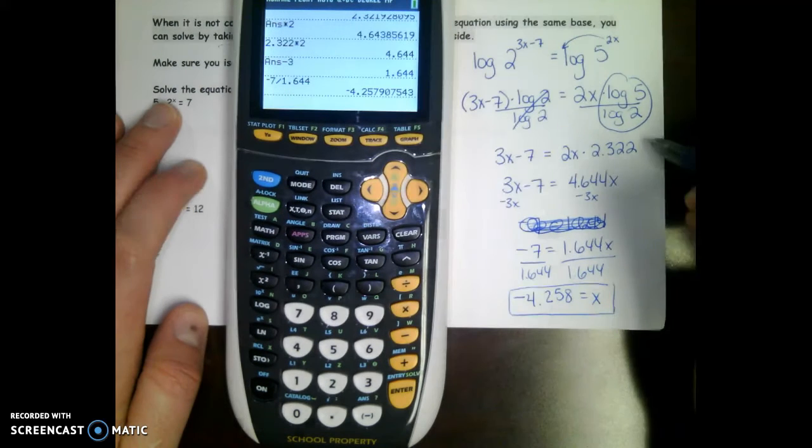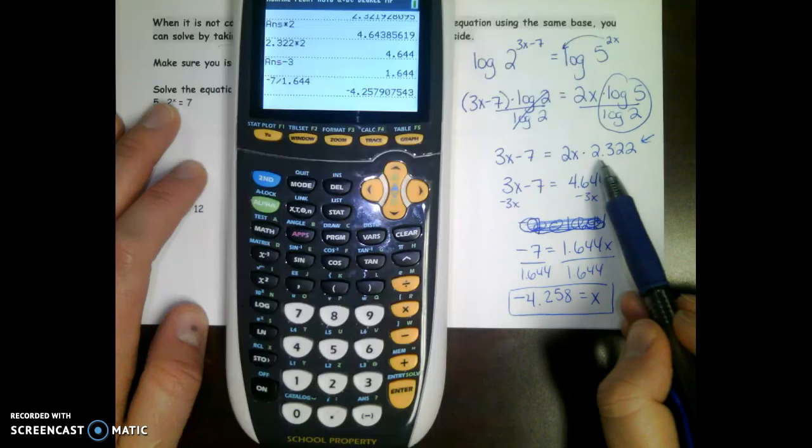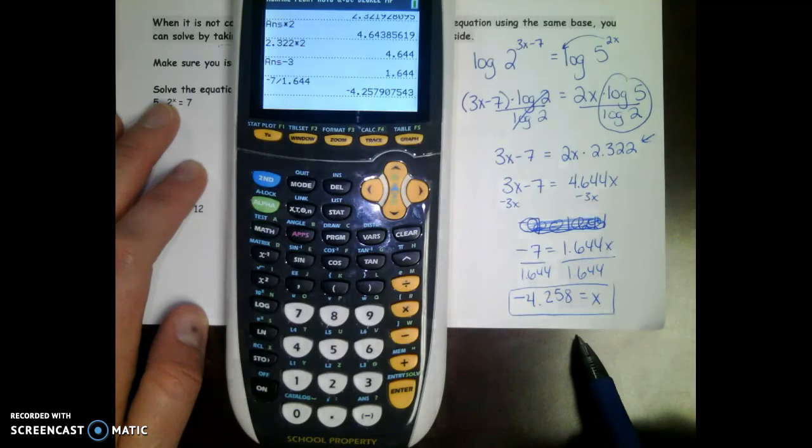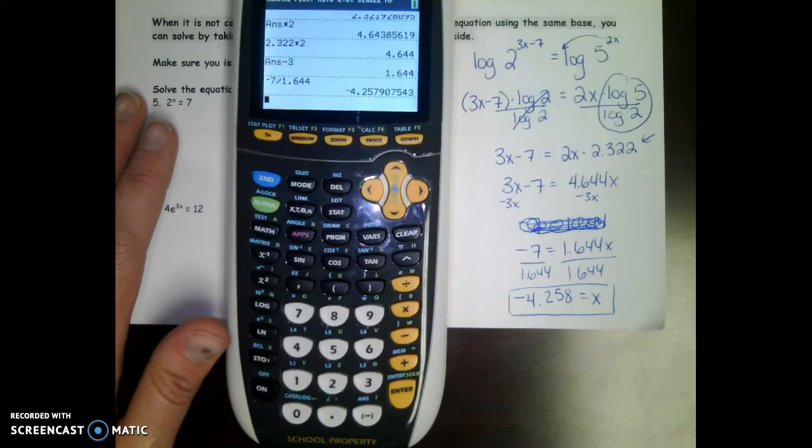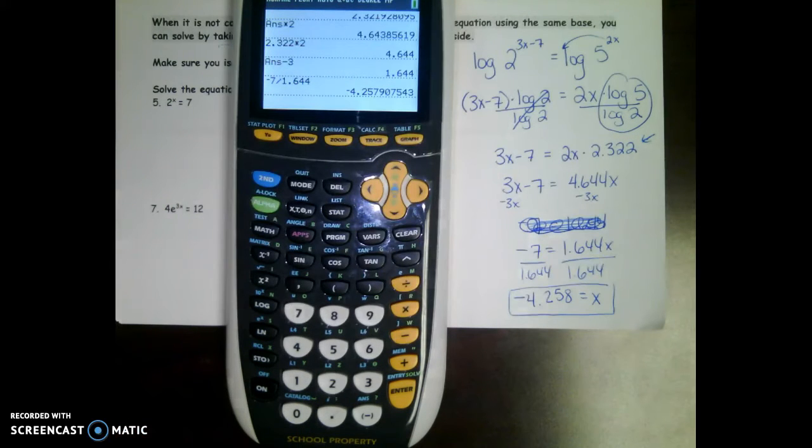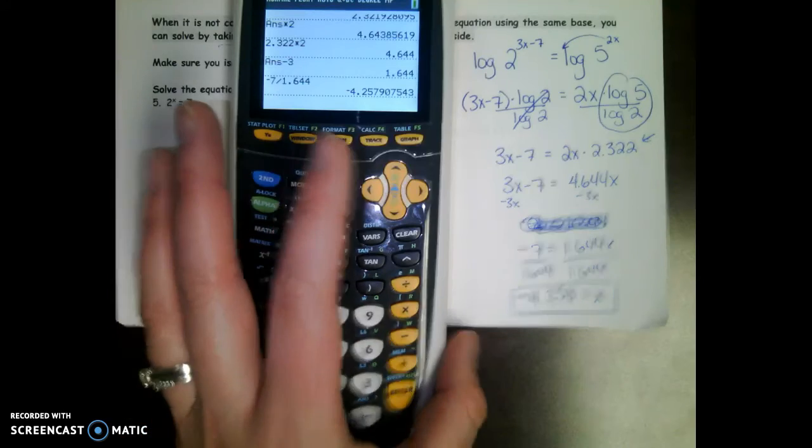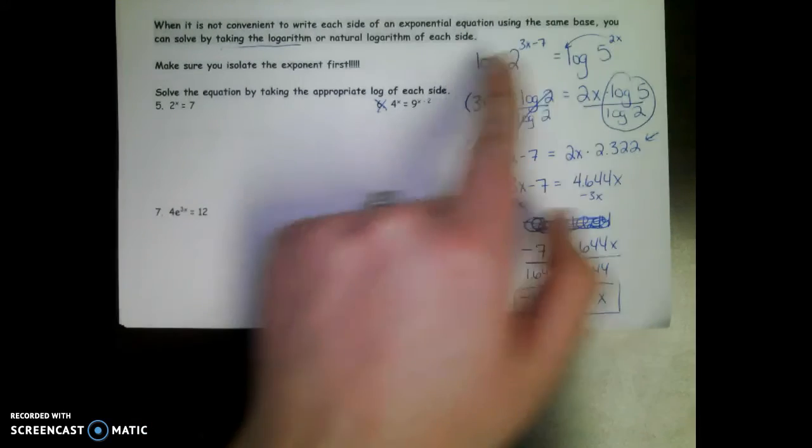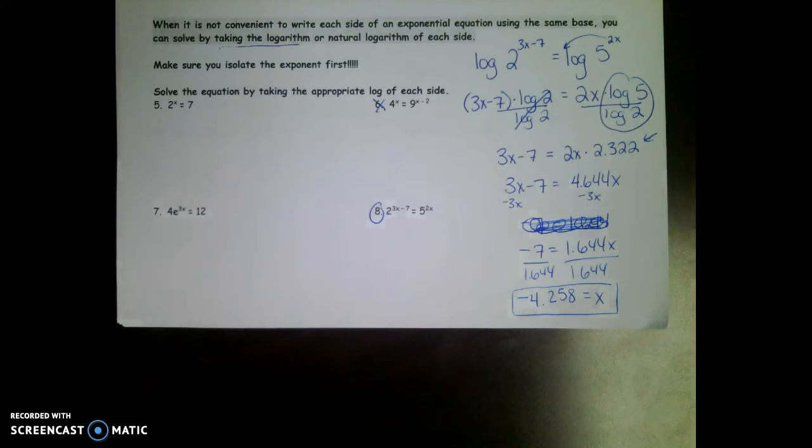Now this isn't a super precise answer because we rounded way up here and then used the rounded value from that point on. But it's okay. I'm going to use several numbers after the decimal to make it at least a little bit more accurate. I will try not to give you very many of these because these are the labor-intensive problems. So if your bases don't match and you have exponents on both sides, take the log of both sides, bring the exponents down, divide the logs to get them all on one side, and then just deal with the decimals.